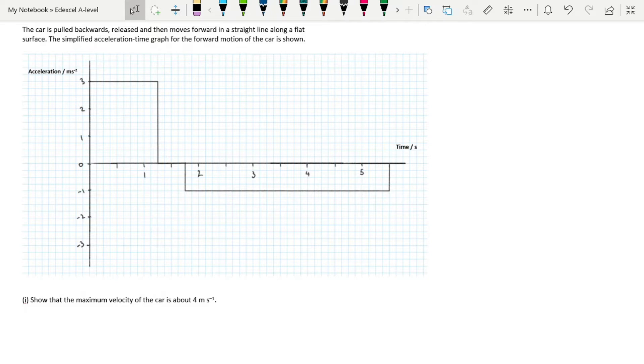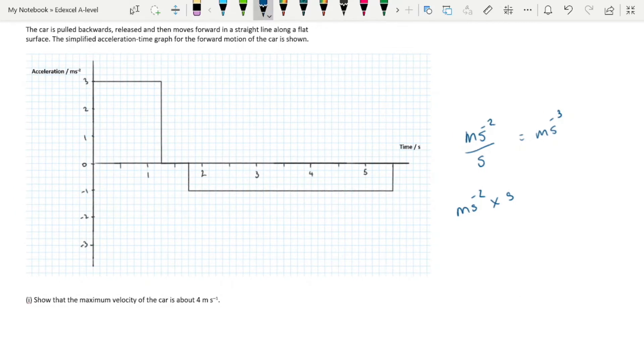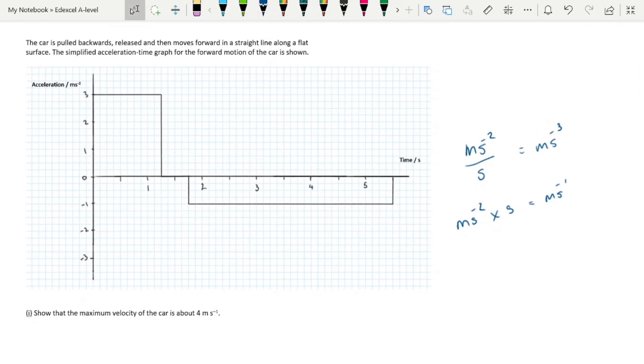Show that the maximum velocity of the car is about 4 meters per second. Any time you see a graph like this, it's going to be either gradient or area. For acceleration-time graphs, the gradient would give meters per second cubed, which is not the unit for velocity. If you find the area, it's meters per second squared times seconds, which gives meters per second. So now we know we have to find the area under the graph.